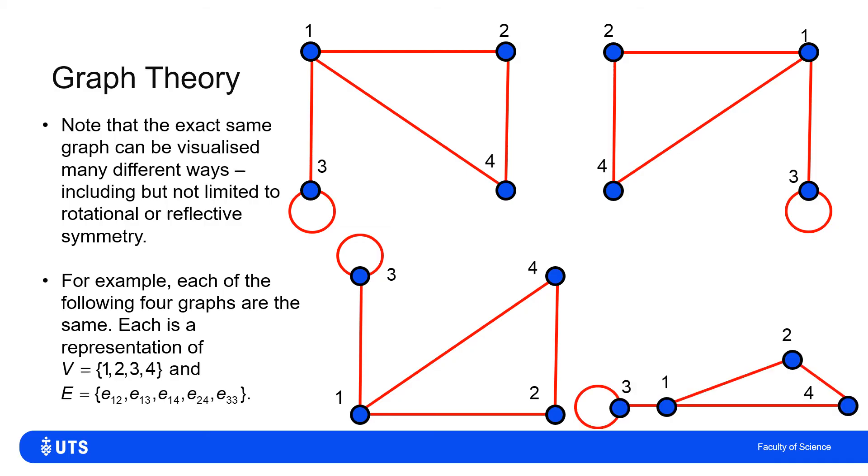But I could draw it completely differently, but it's still the same. There is still one joining to 2, one joining to 4, four joining to 2, one joining to 3, and three joining to itself. So all four of those graphs are the same.